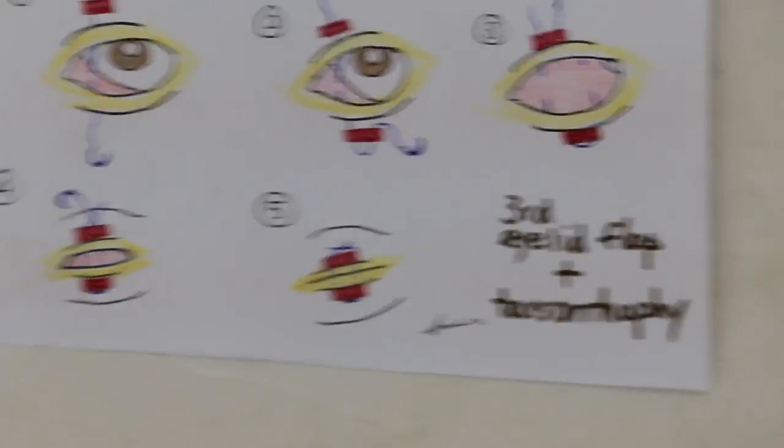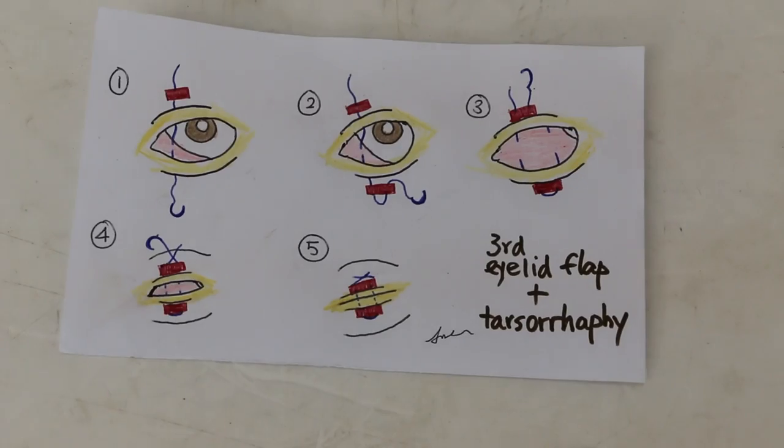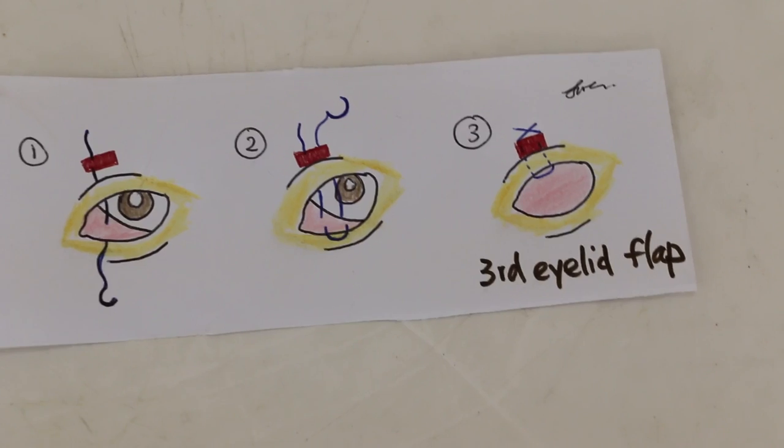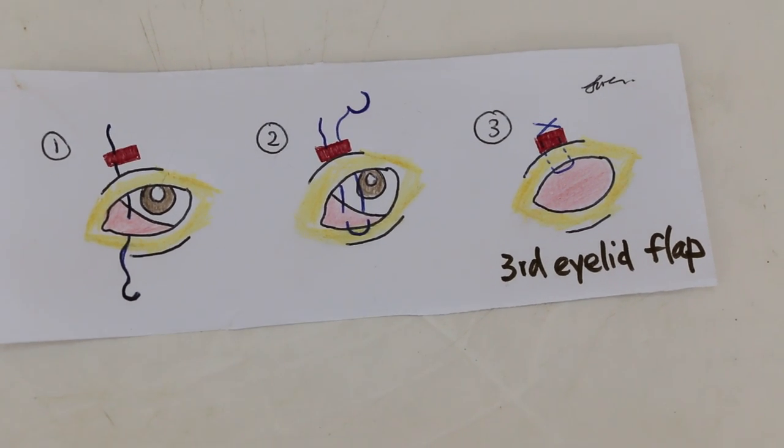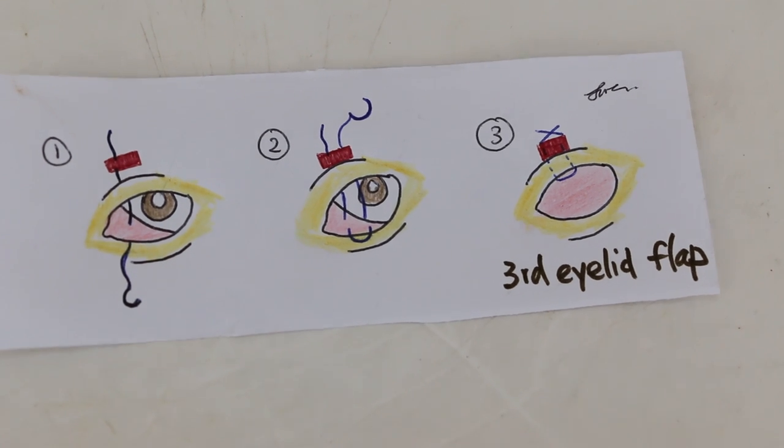This is called third eyelid flap and tarsorrhaphy, done on this surgical area. Now the alternatives are third eyelid flap alone, whereby you don't have this lower eyelid involved.